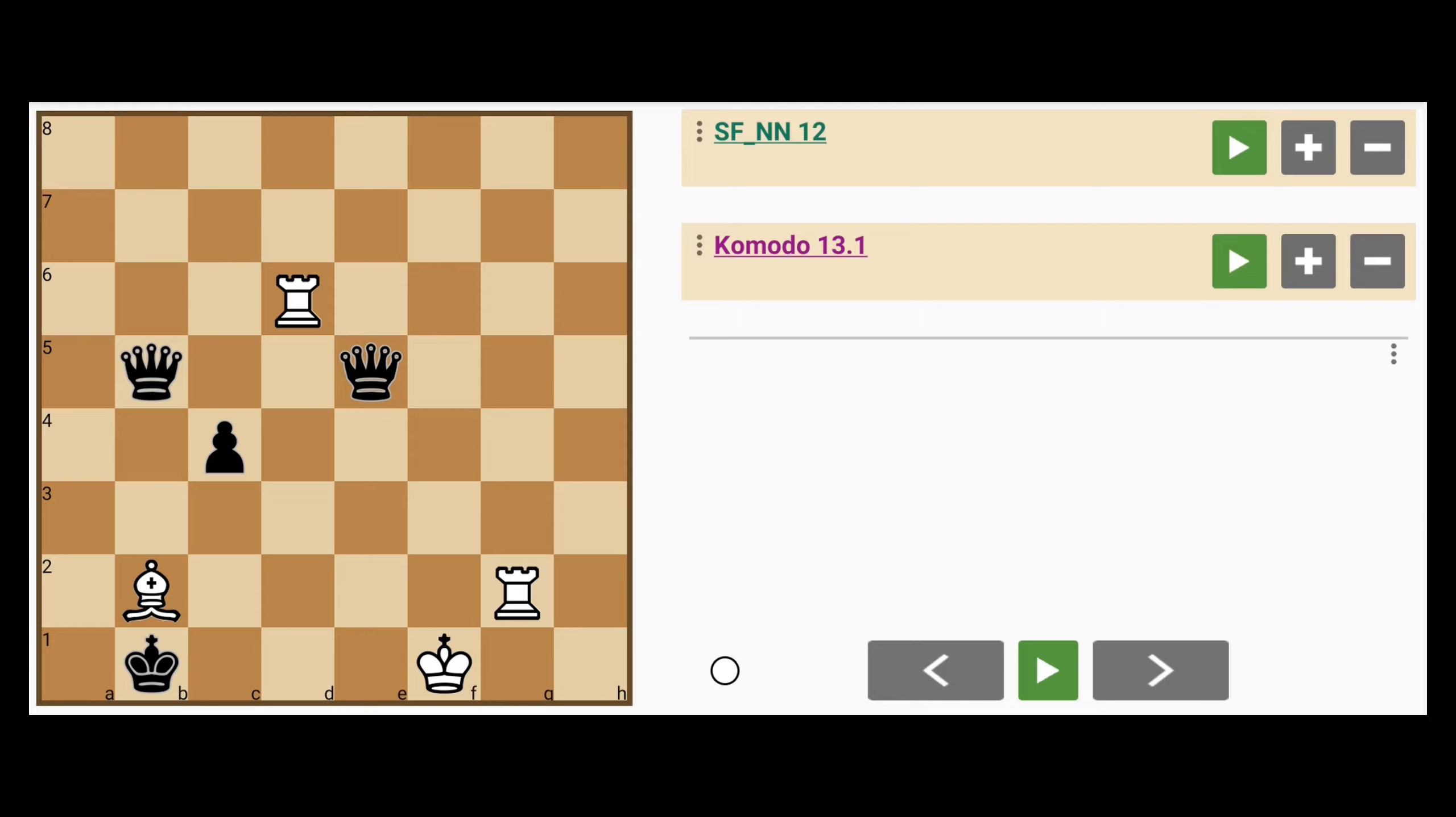Black is ahead in material, but black's queen on e5 is in a position to be captured by the bishop. Incidentally, that queen also threatens the rook on d6.